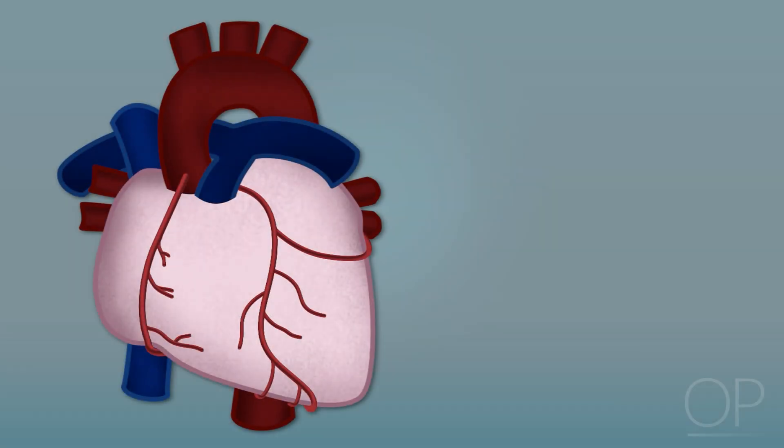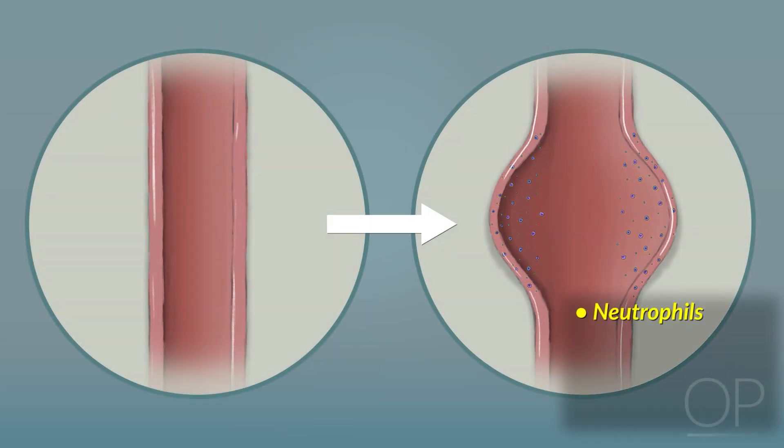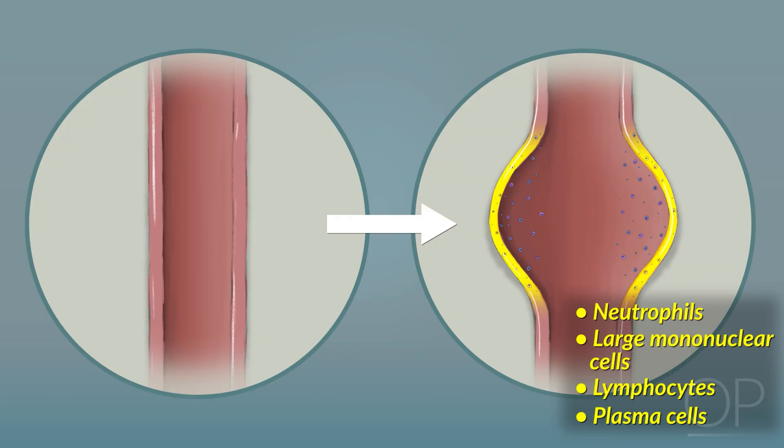Kawasaki disease arteritis particularly affects the coronary arteries, and coronary aneurysms are caused by vascular infiltration first of neutrophils, transitioning to large mononuclear cells, along with lymphocytes and plasma cells, causing a weakening and dilatation of the vessel walls.